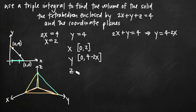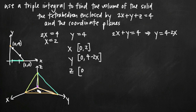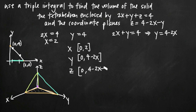So our limits of integration for y are from 0 to 4 minus 2x. For z, the lowest value is 0, but the height depends on our original equation. To find the upper limit of z, we solve the original equation for z by subtracting 2x and y from both sides, giving z equals 4 minus 2x minus y. So our limits of integration for z are 0 to 4 minus 2x minus y.